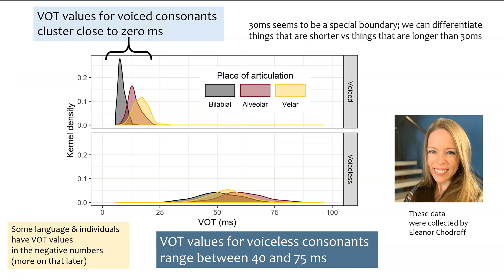So this shows data collected by Eleanor Shadroff, showing the distributions of voice onset time values for different sounds in English. Up here we have our voiced sounds b, d, and g, and we can see that for the most part, the voice onset times range close to zero or in the low numbers there. They're a little bit different across those categories in ways that extend beyond the scope of what we'll talk about here. The main thing we want to look at is the difference between the top panel and the bottom panel, where the voice onset times are primarily between 40 and 75 milliseconds.